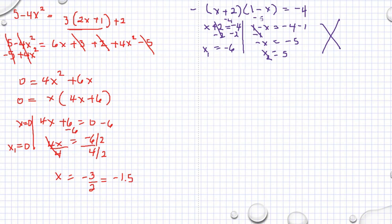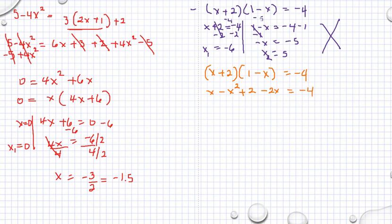So never do that. The correct approach: expand the product x plus 2 times 1 minus x. Then we have x minus x squared added by 2 subtracted by 2x, which is equal to negative 4. Now we rearrange: negative x squared minus x plus 2, and adding both sides by 4, gives negative x squared minus x plus 6, is equal to 0.